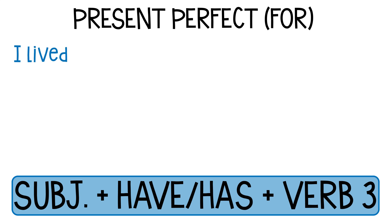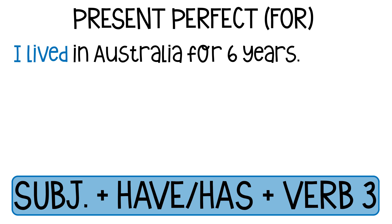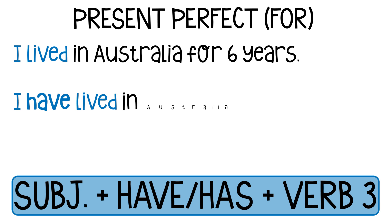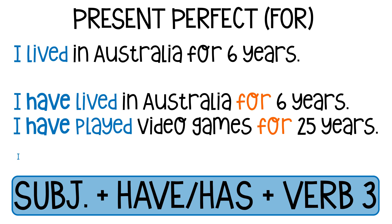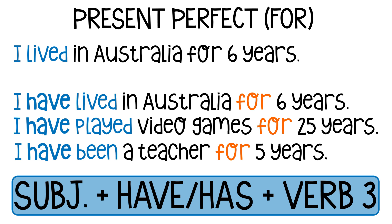If I told you I lived in Australia for six years, that means that in the past I lived in Australia for a period of time, but I no longer live there. How about if I say I have lived in Australia for six years, using present perfect tense with for. This now means that I moved to Australia six years ago and I still live there. A couple more examples: I have played video games for 25 years. I have been an English teacher for five years. You can see I have used present perfect with for to talk about something which started in the past and has continued until now.